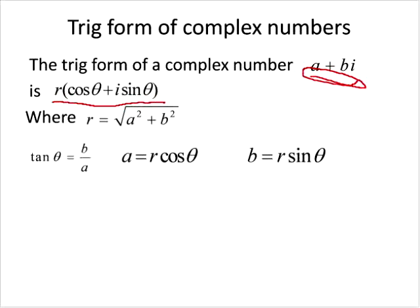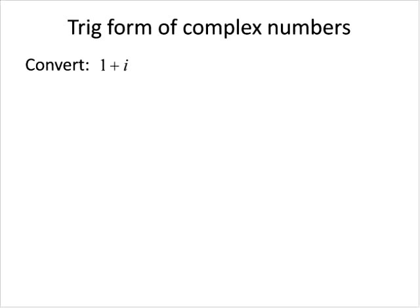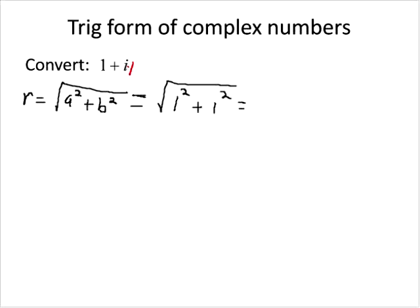Let me show you just one little example. Let's say I want to take the complex number 1 plus i and change it into trig form. The very first thing I need to do is find out what R is. R is going to be the square root of A squared plus B squared. B is the number multiplied times i — in this case there isn't a coefficient, so we think of it as times one. So B is one and A is one. So R is the square root of one squared plus one squared, which is the square root of two.